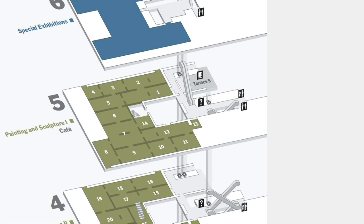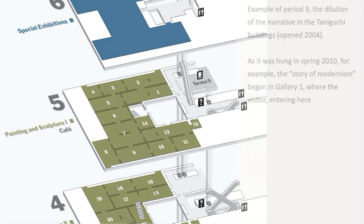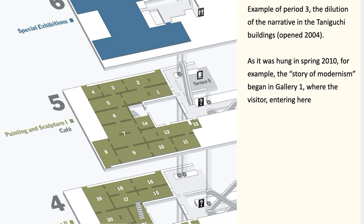This is a floor plan given to visitors in 2010, and I'm going to use it as an example of the third period — the dilution of the narrative in the Taniguchi building. When you came as a visitor in spring 2010, you would be handed this map. If you asked, you would be told that the exhibition begins in gallery number one. It wasn't that everyone had to begin there, but there was a narrative strongly suggested by the maps.